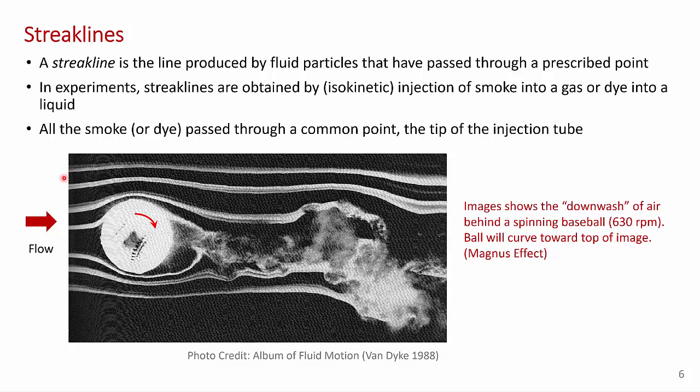Now, just to explain a little bit, this ball is rotating clockwise and you can see the smoke is flowing downwards. There's a downwash of smoke and that flow being pushed downward by the spinning ball will cause the ball to move towards the top of the image if it wasn't constrained. This is what causes a baseball to curve when a pitcher throws a curve ball. It's called the Magnus effect.